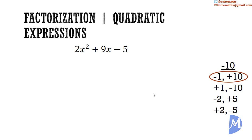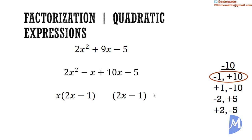So we place positive 9x as negative 1x added to positive 10x. Now we have 2x squared minus x added to 10x minus 5 to factorize by grouping. The HCF of 2x squared and negative x is x. We multiply x by 2x to get 2x squared, and x by negative 1 to get negative x. We keep the same thing in brackets: 2x minus 1. We multiply 2x by positive 5 to get positive 10x. We confirm that positive 5 multiplied by negative 1 gives negative 5. The HCF is 2x minus 1, and we multiply it by x and positive 5.